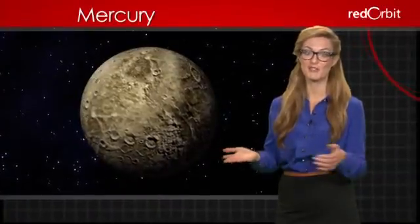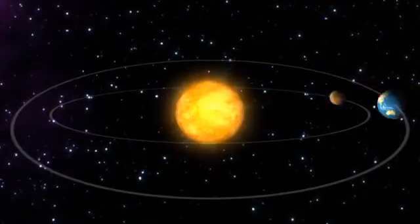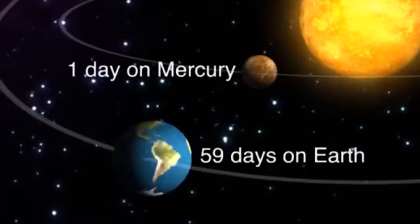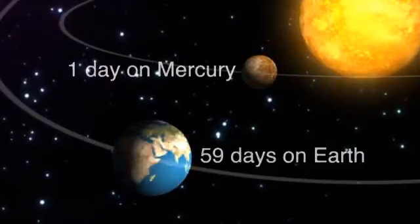If planetary orbits were racetracks, Mercury would always be victorious. It orbits the sun in only 88 days, faster than any of the eight major planets. It also spins very slowly upon its axis, so a single day on Mercury takes almost 59 Earth days.